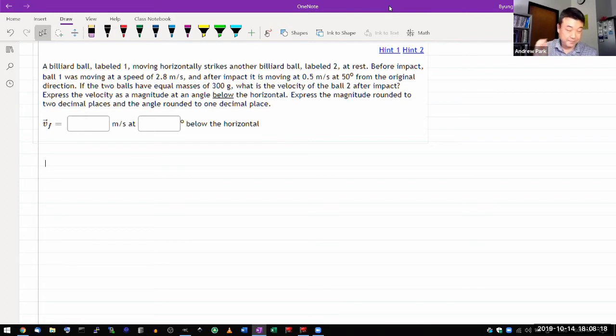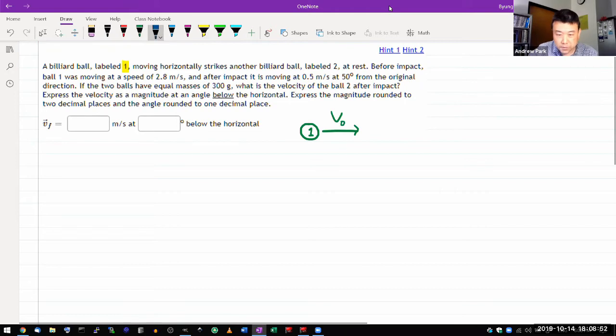So let me read, I probably should have read it before starting this virtual class session, but let me read it now, and we'll just do this in real time. Billiard ball labeled 1, I have one billiard ball moving horizontally strikes another billiard ball. Billiard ball labeled 2 at rest. I guess I want to draw it a little bit below because I'm reading ahead to something about the 50 degrees thing. So ball 2, which is at rest initially, and it's saying it was moving at speed of 2.8 meters per second. So that's giving me what I'm labeling as V-naught.